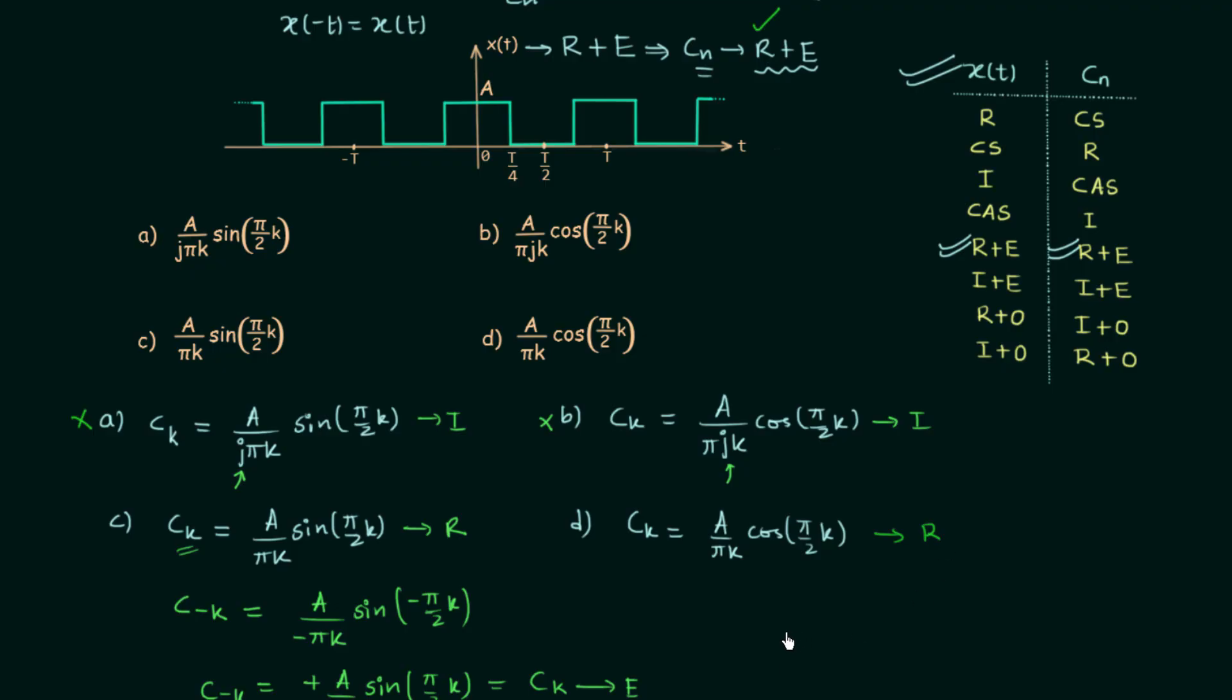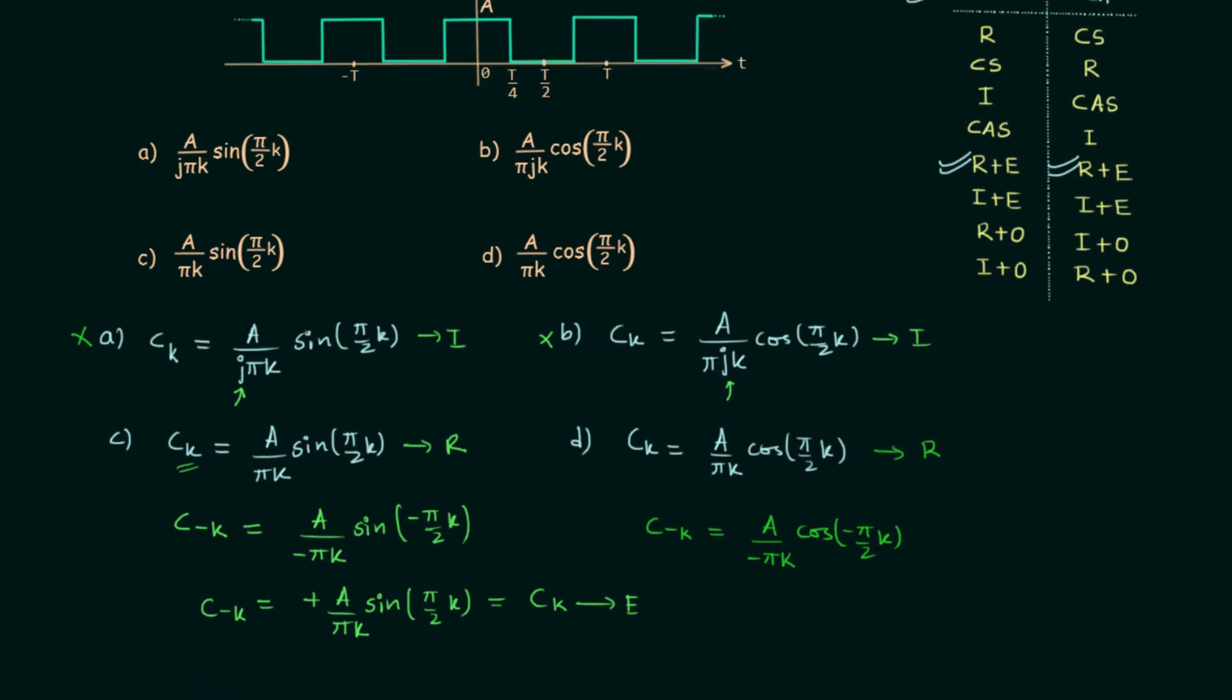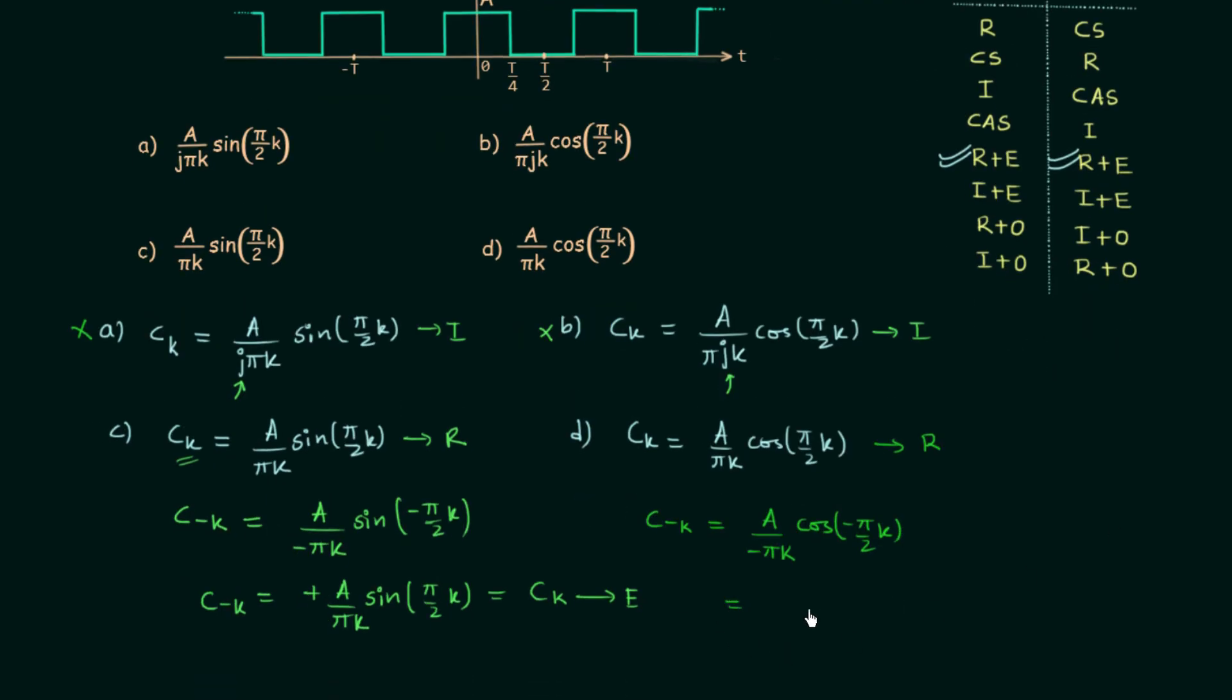Now we will check whether it is even or not. And for this we will perform the reversal operation, we will find C(-K) and we will have A over minus pi*K cos(-pi/2*K). And we already know cos(-theta) is equal to cos(theta).